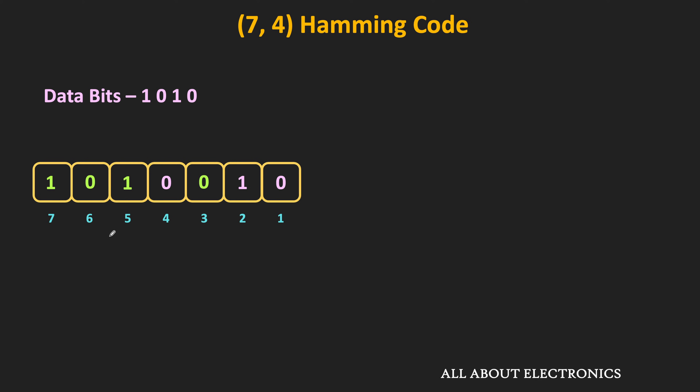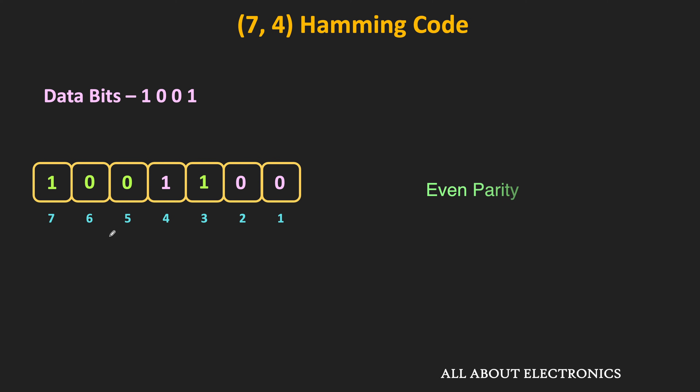Similarly, try to find the 7-bit Hamming code for the data bits 1, 0, 0, 1. If you follow the same procedure, you will get the corresponding Hamming code. So far in our discussion, we have assumed even parity. But we can also use odd parity, where the parity bits are set such that the overall parity of a certain group of bits is odd. In encoding, even or odd parity are both fine, but the transmitter and receiver must agree on the same protocol.